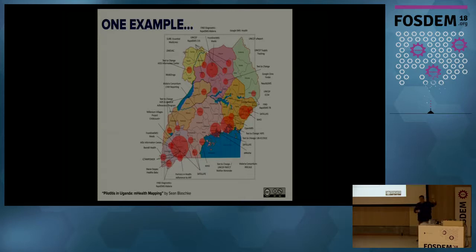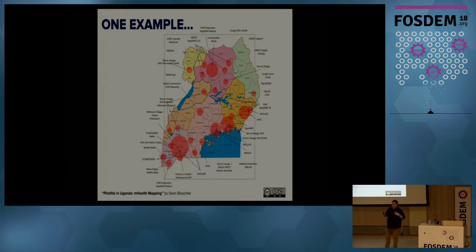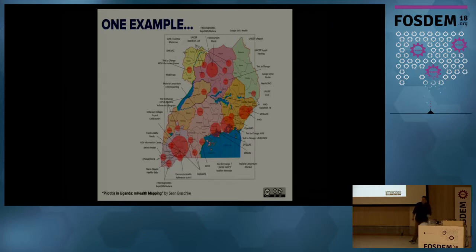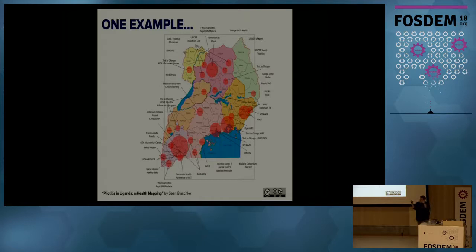Most of these projects had what's called an elephant factor of one. Has anyone heard of the elephant factor for software projects? An elephant factor is basically how many organizations are contributing to your open source project. Most of these projects had an elephant factor of one, meaning a single organization or individual was contributing. That's a huge risk because that organization may go away tomorrow — they may run out of funding — and the actual communities and states and regions in Uganda were stuck, with no way to maintain that software.